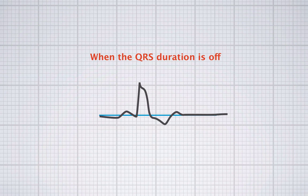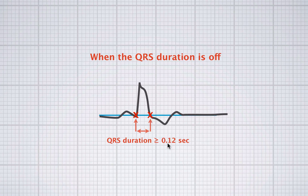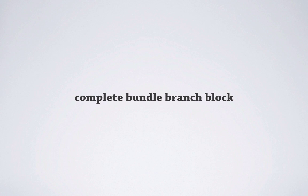Now let's look at another example — you can already see that something must be wrong here. The QRS starts here and ends here, and the duration is over 0.12 seconds. Counting it out: three and a half millimeters times 0.04 gives 0.14 seconds, which is longer than 0.12 seconds. So what we have here is a complete bundle branch block. The depolarization travels from the AV node to the ventricles through the bundle branches — there's a right bundle branch and a left bundle branch. When one of these branches is blocked, depolarization of the ventricle takes longer than normal, which is why the QRS complex is broadened.